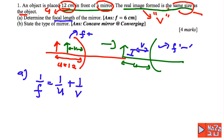Same size as object, so meaning the form is the same size as an object, meaning U is equal to V. So meaning here, this is 1 over F is equal to - the position, the object distance is 12, so meaning that V also 12. So you can find the value of the focal length of the mirror is 6 cm.